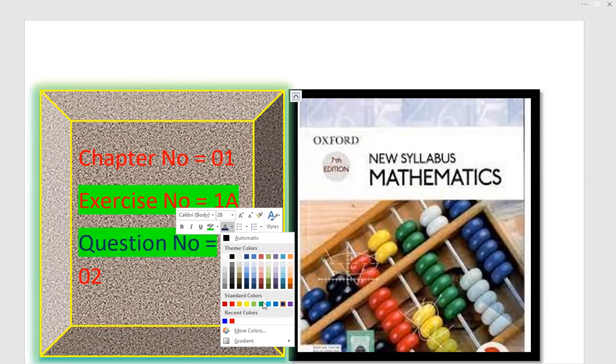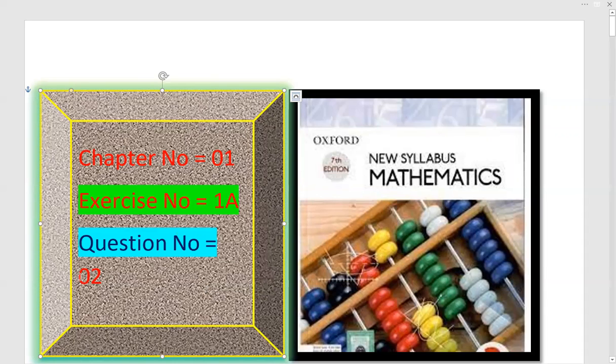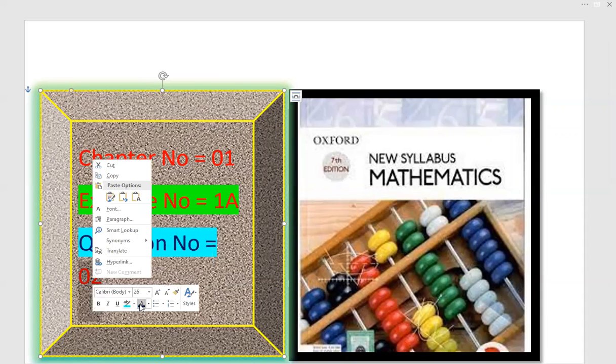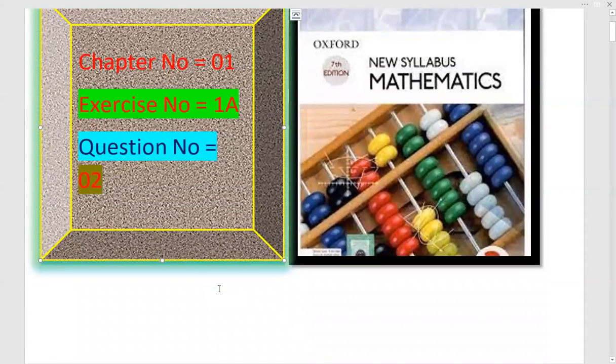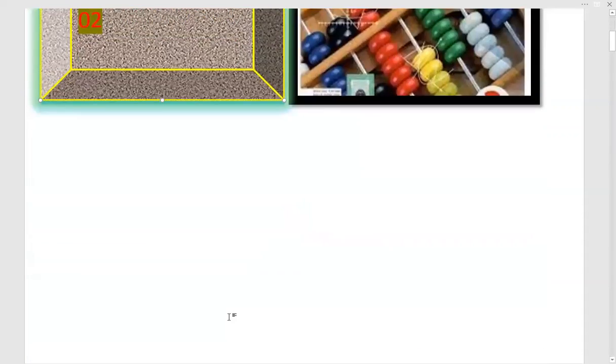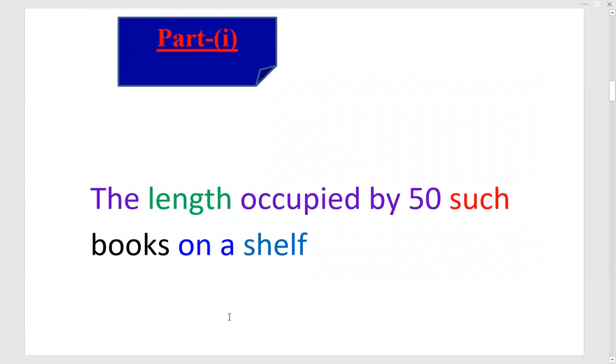Question number one upload complete and this video question number two upload. Question number two has two parts. In a bookstore, sixty identical books occupy a length of one point five meter on a shelf. Find part one: the length occupied by fifty such books on a shelf.